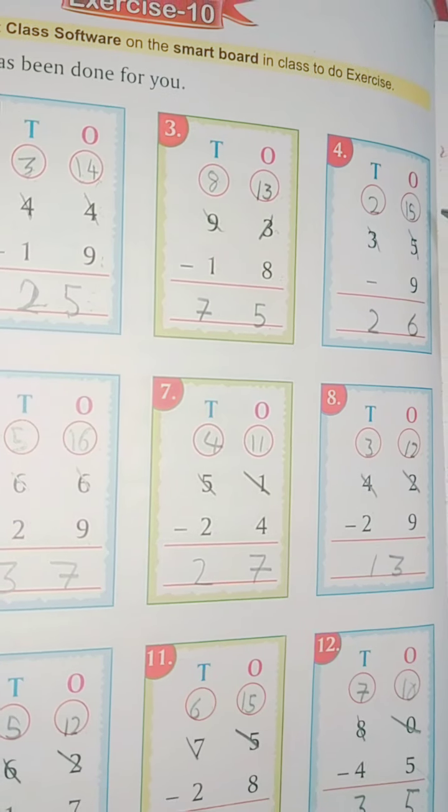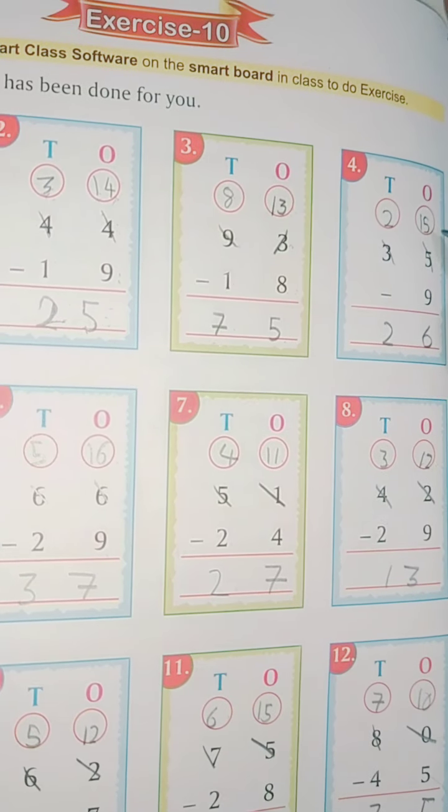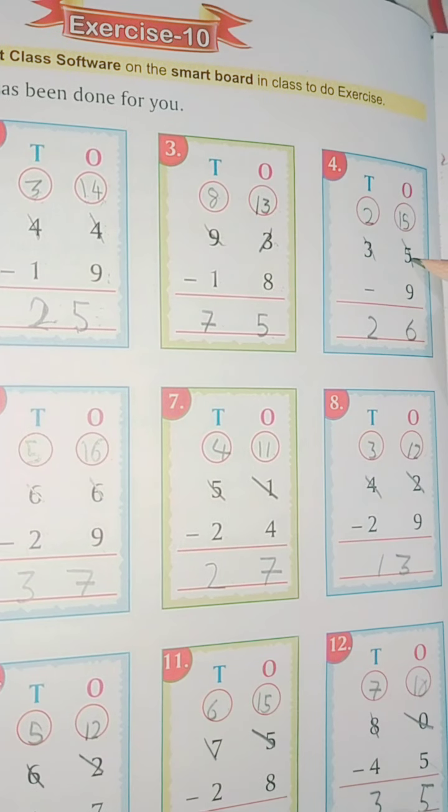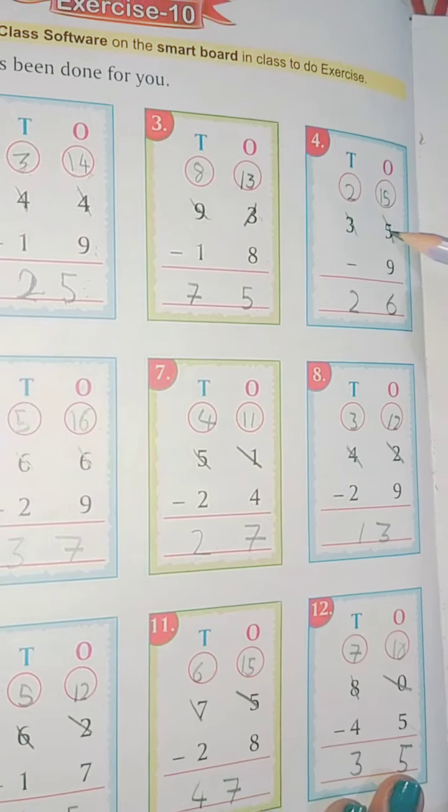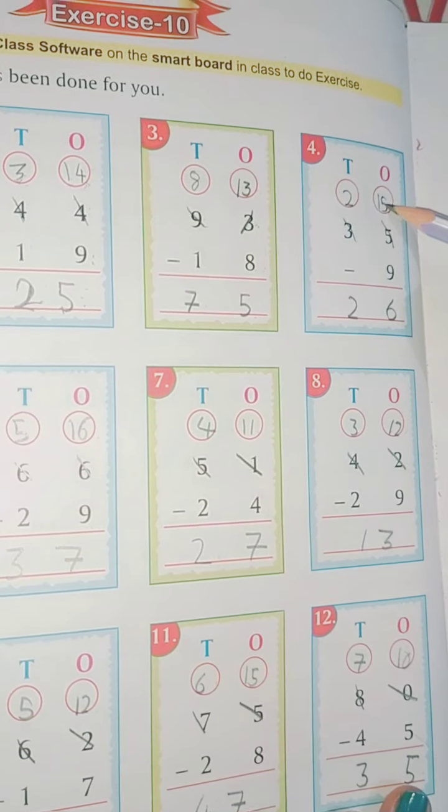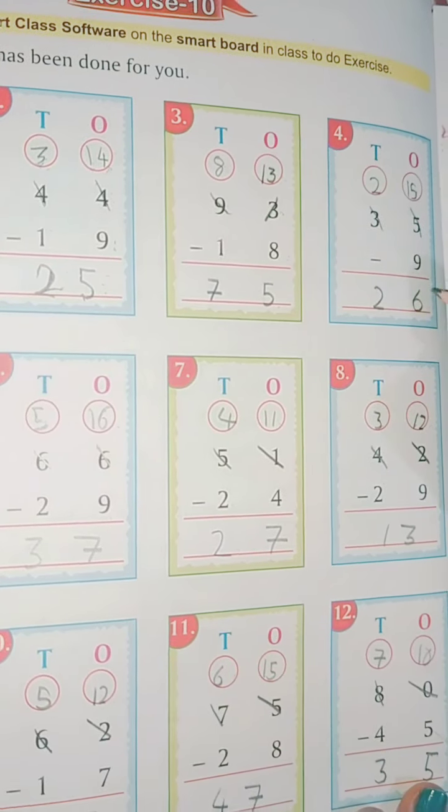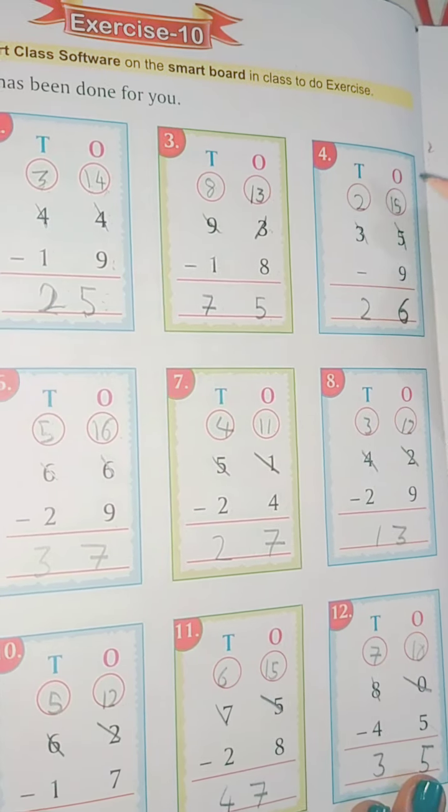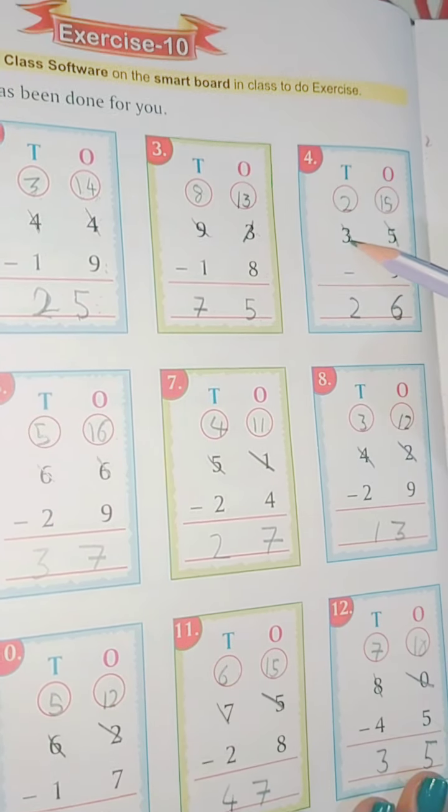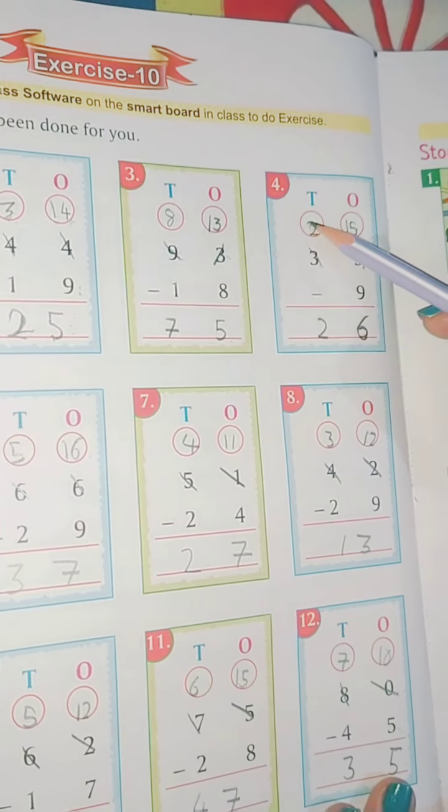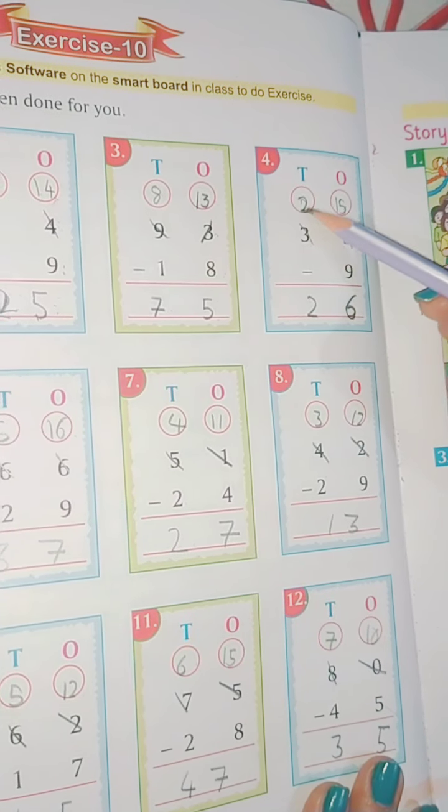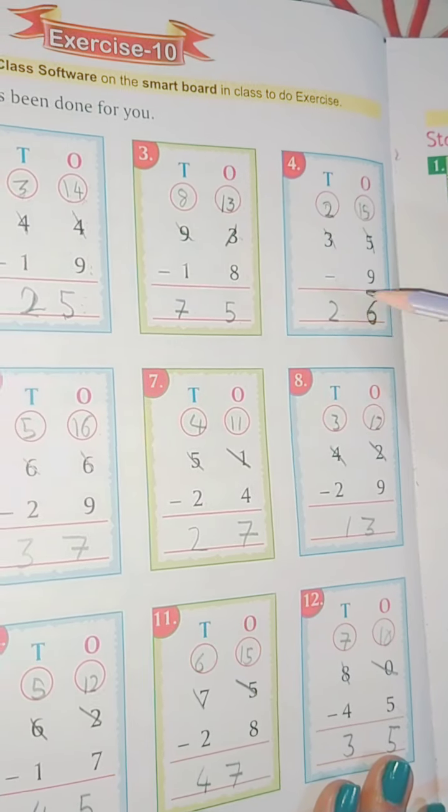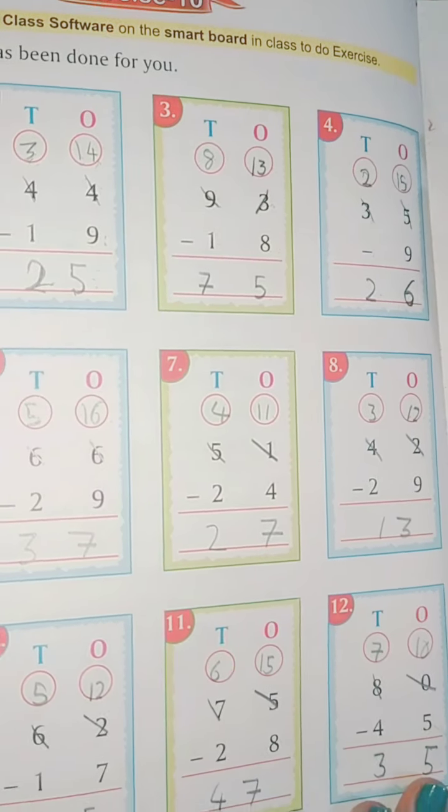You will have to borrow the number. Now if we have to borrow the number, then we will borrow it. So we will do 15, we will do 9 minus, so we will get 6. 6 is left. Now we have 3 minus here, we have 5, so we have 2. So we have minus here, so 2 as it is, we will carry down. 26 is the answer.